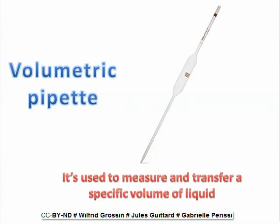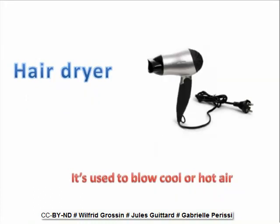Volumetric pipette. It's used to measure and transfer a specific volume of liquid. Hair dryer. It's used to blow cool or hot air.